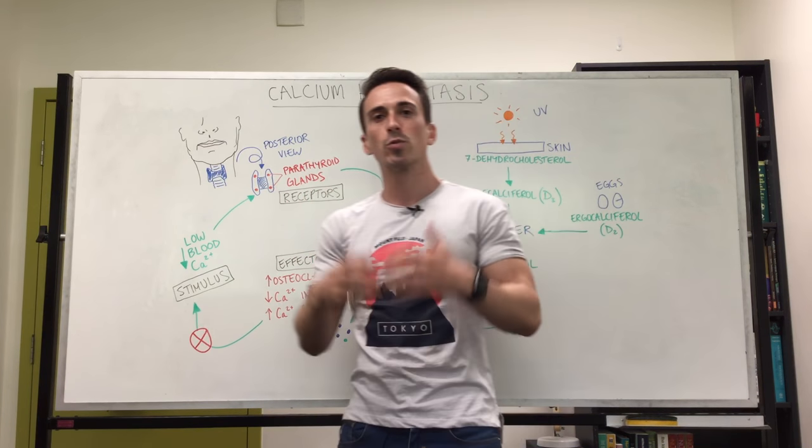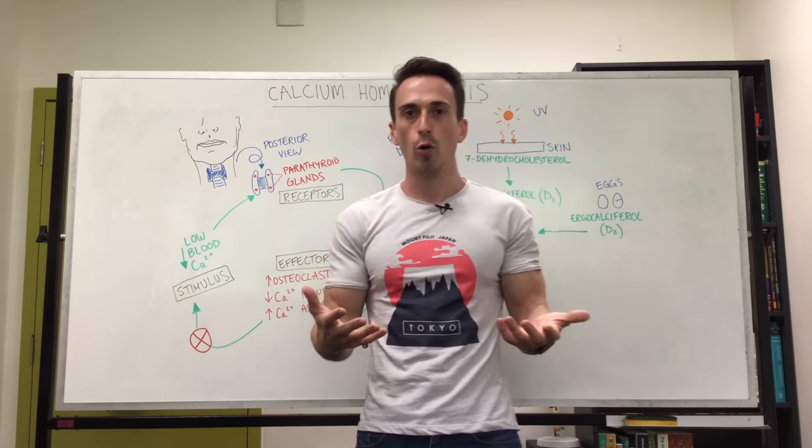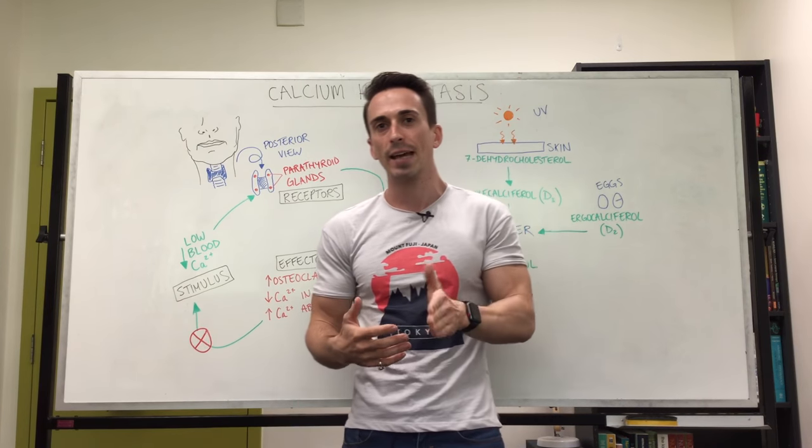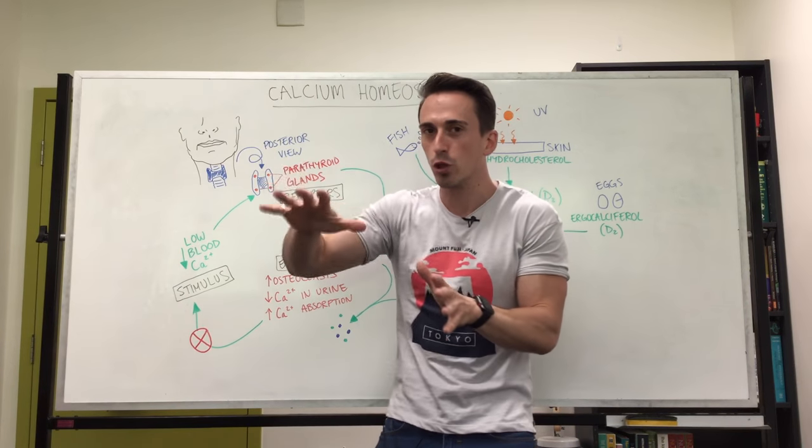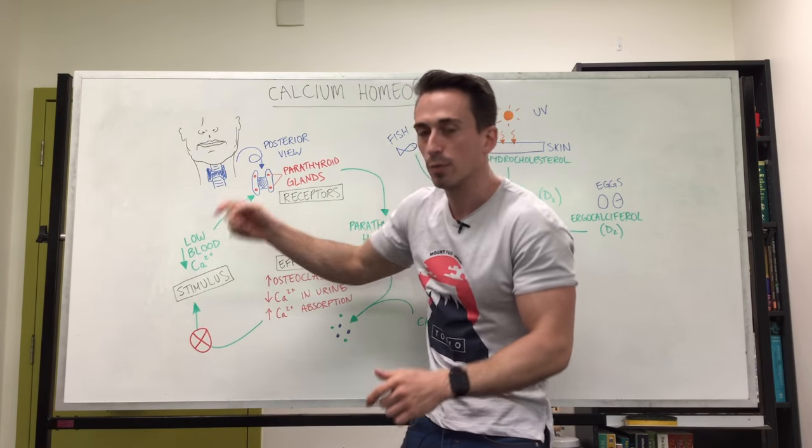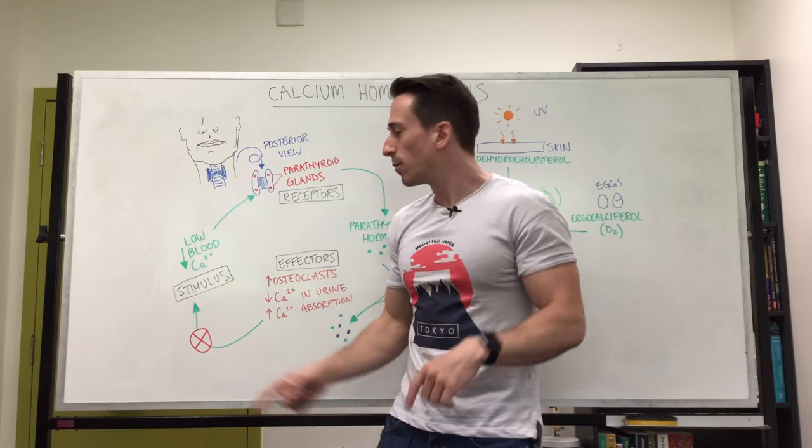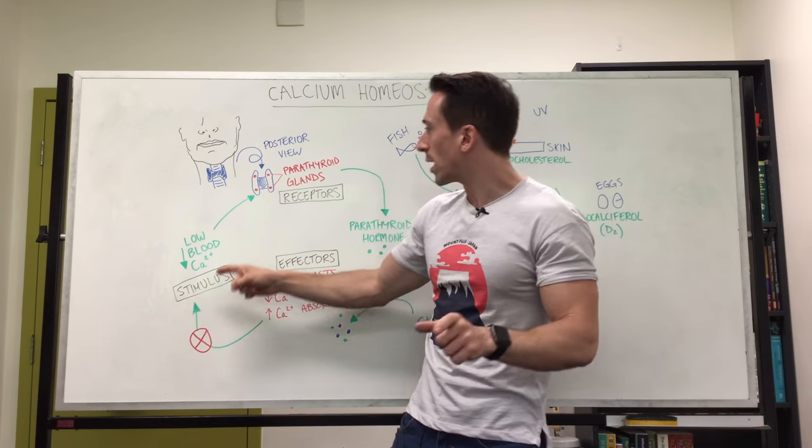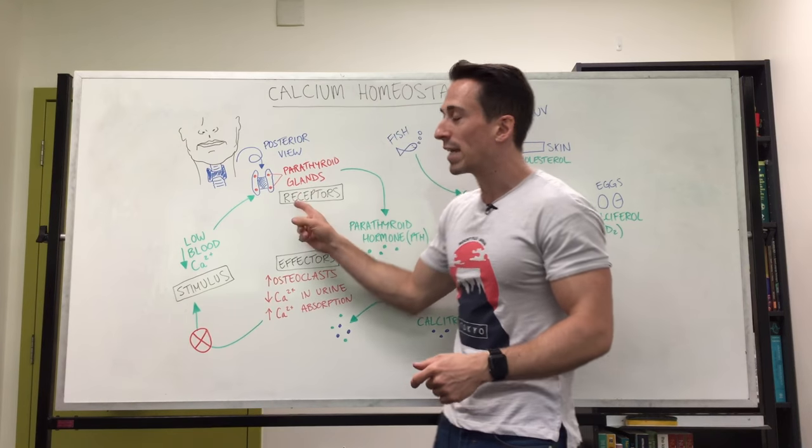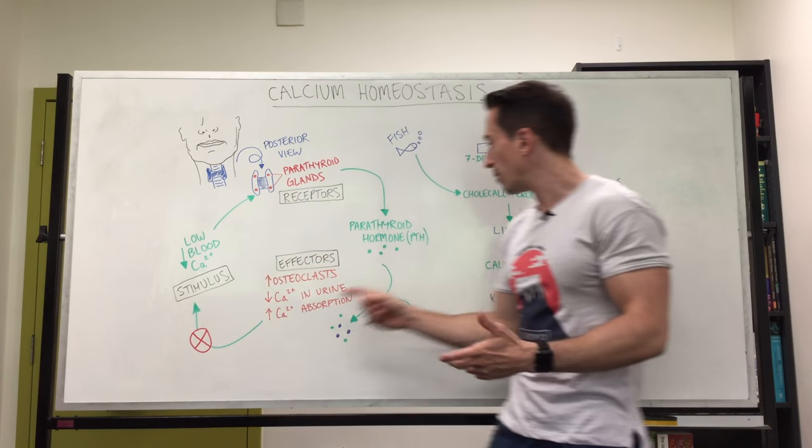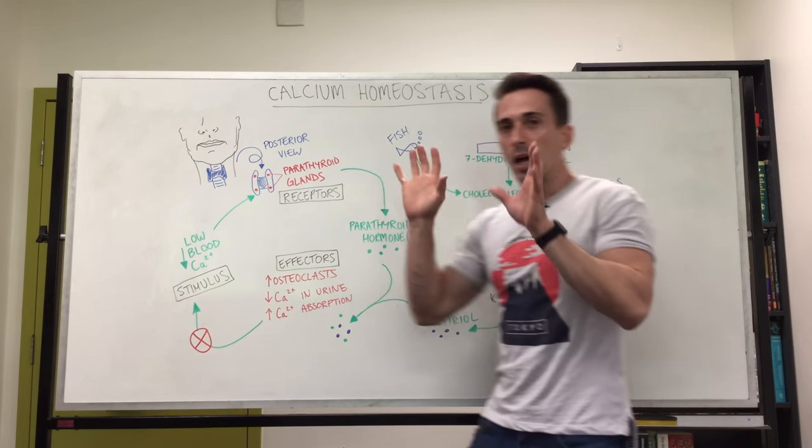Now these parathyroid glands release something called parathyroid hormone. We'll just call it PTH from now on. Now what happens is if your blood calcium levels go too low, if they go too low, this is going to be a stimulus to trigger your parathyroid glands which are the receptors in this scenario to release their parathyroid hormone PTH. Now I want you to think about this.